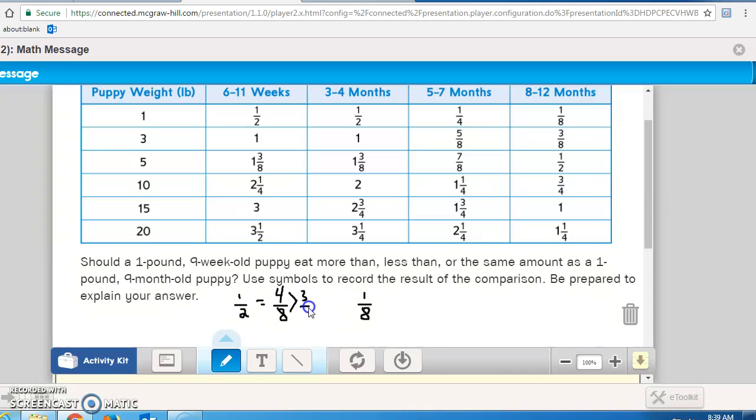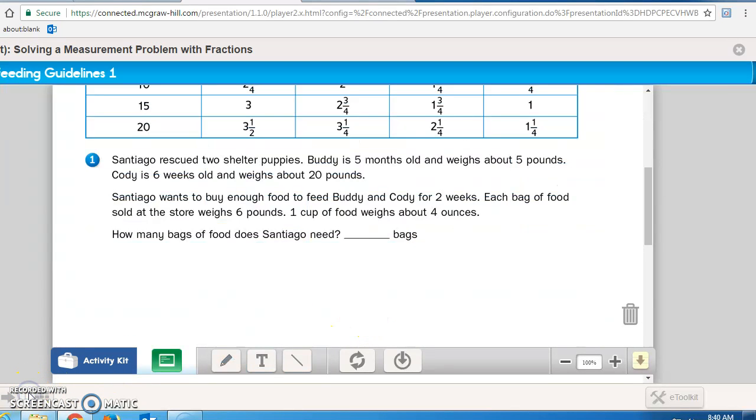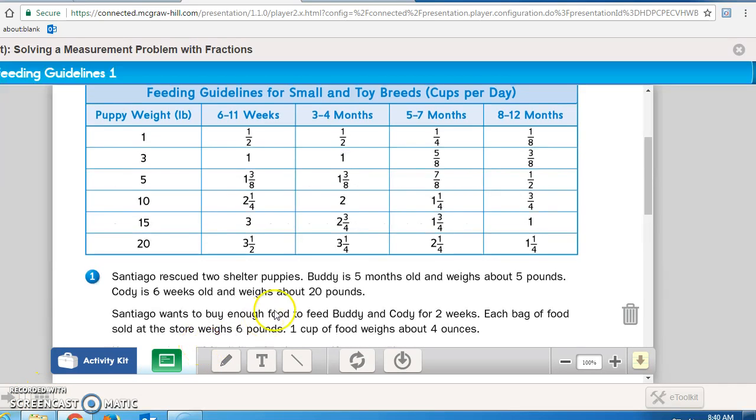Now for the actual problem on page 306. It says Santiago rescued two shelter puppies. Buddy is 5 months old and weighs about 5 pounds. Cody is 6 weeks old and weighs about 20 pounds. Santiago wants to buy enough food to feed Buddy and Cody for 2 weeks.